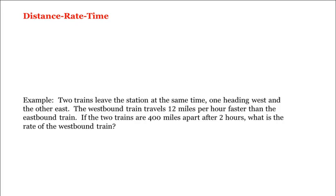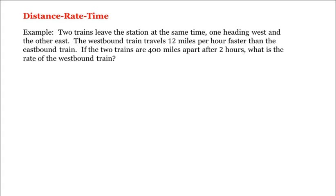Let's look at distance, rate, and time. For example: two trains leave a station at the same time, one heading west and the other east. The westbound train travels 12 miles per hour faster than the eastbound train. If the two trains are 400 miles apart after two hours, what is the rate of the westbound train?